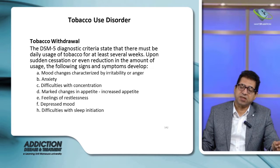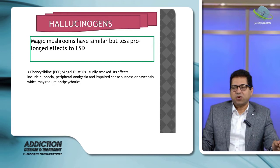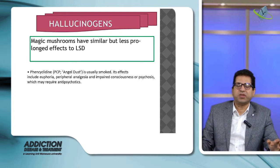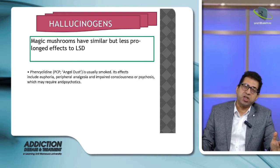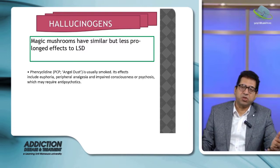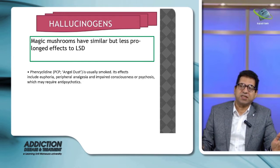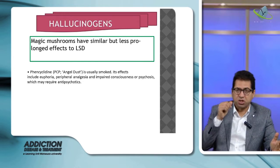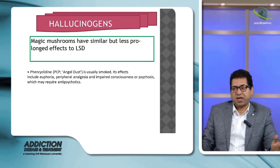Hallucinogens include magic mushrooms, LSD, and PCP (phencyclidine). The main effect of these drugs is euphoria and hallucinations — meaning the person can see, feel, or hear things that are not present. These hallucinations are a defining feature of hallucinogen use.